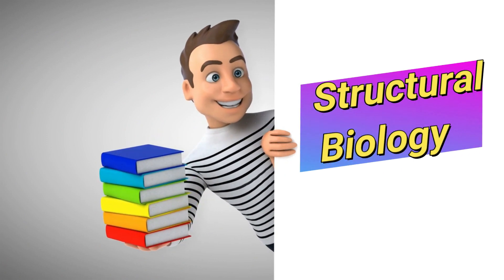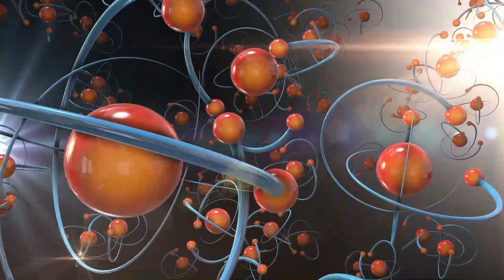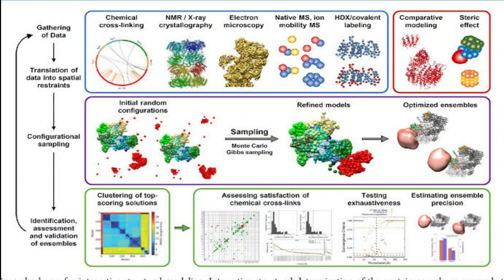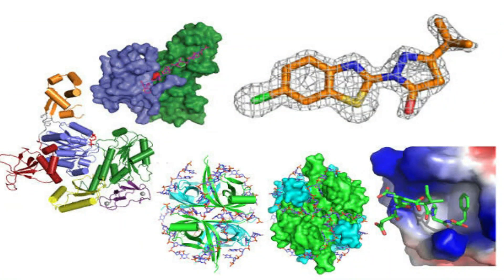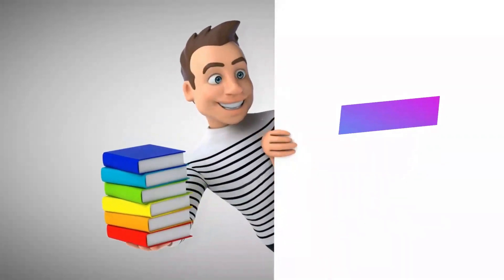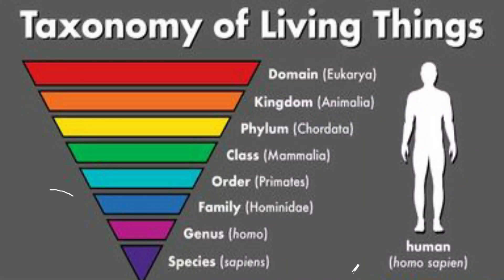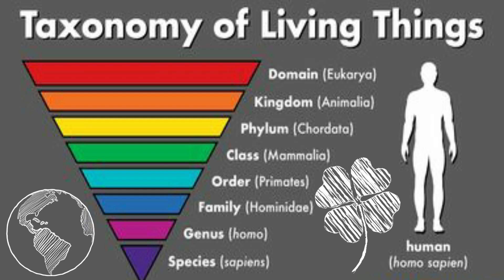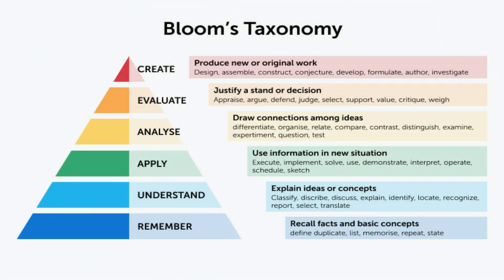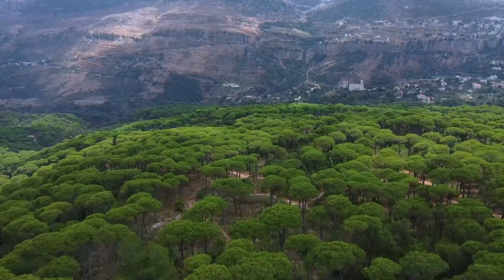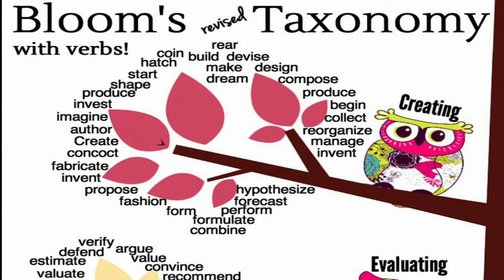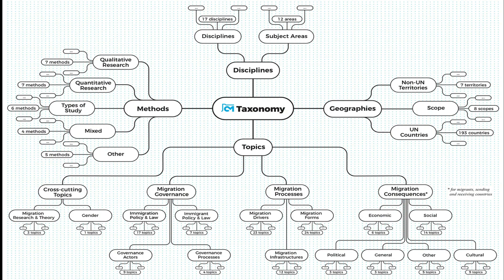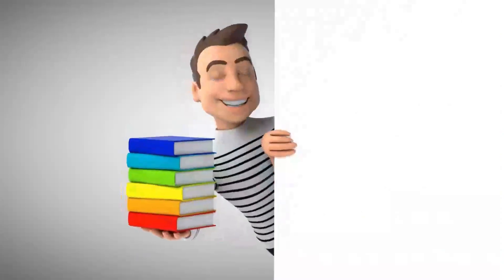The next branch is structural biology. It is the branch of molecular biology, biochemistry, and biophysics concerned with the molecular structure and function of biological macromolecules like protein and RNA. The next branch is taxonomy — the scientific study of naming, defining, and classifying groups of biological organisms based on shared characteristics, including all organisms like plants, animals, and microorganisms of the world. It deals with the nomenclature and classification of living organisms.